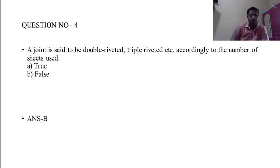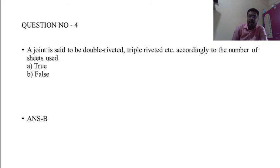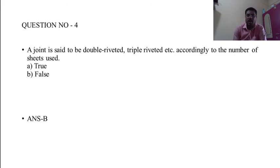Question 4: A joint is said to be double riveted, triple riveted, etc., according to the number of sheets used — true or false? The answer is false. The joint is named according to the number of rows of rivets, not sheets.